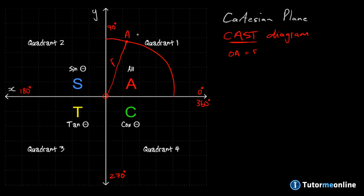The line OA is of course the radius of the circle. The radius is a constant value all the way around the circle — it's not going to change, because it is the distance from the center of the circle to the edge. Our center point in this case is the origin, at coordinates (0, 0) on the Cartesian plane. So we know that r is always positive.